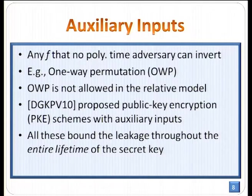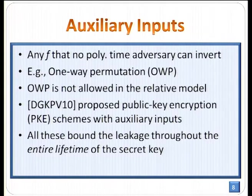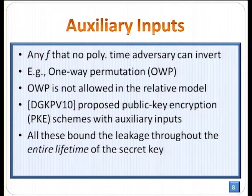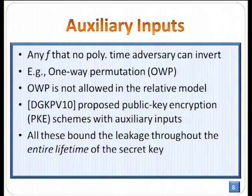Therefore, the auxiliary input model was proposed in 2010. In this model, we consider any leakage function f that no polynomial-time adversary can invert — for example, a one-way permutation — which is not allowed in the previous relative leakage model because it would leak the whole secret key information-theoretically. We have the first public-key encryption scheme with auxiliary input proposed in 2010. Both the auxiliary input model and the relative leakage model bound the leakage throughout the entire lifetime of the secret key, answering only half of the open question.